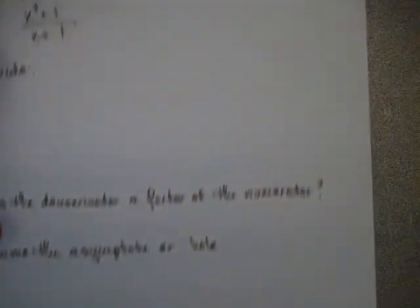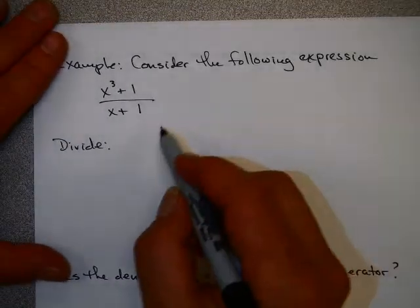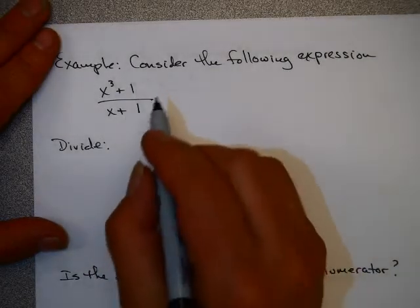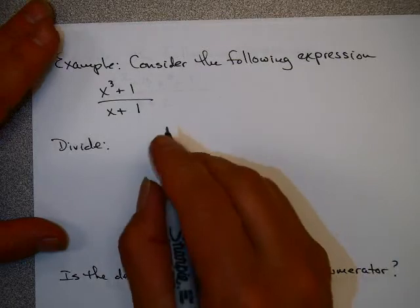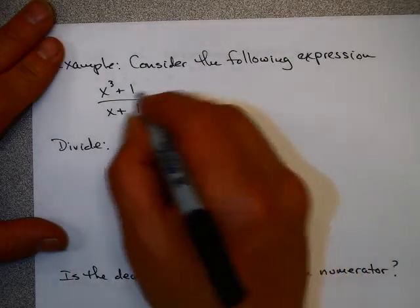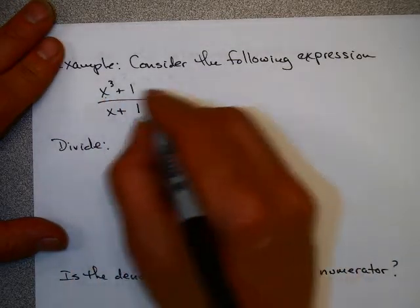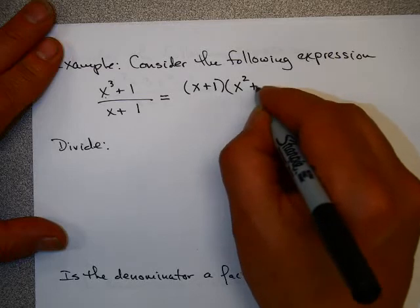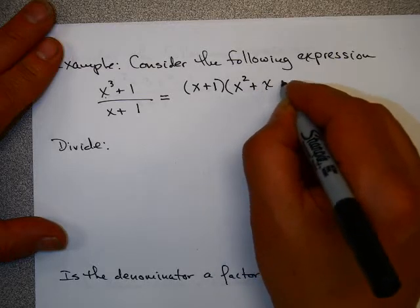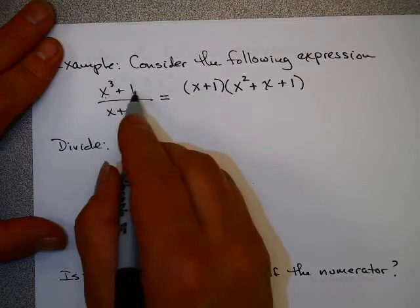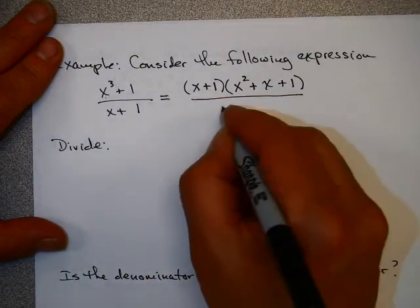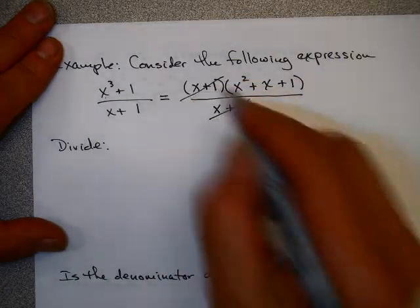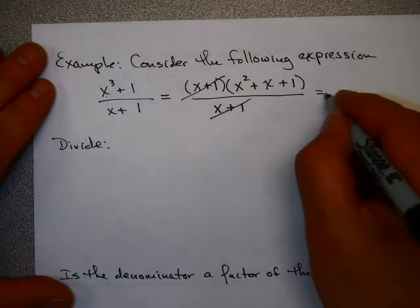Okay, let's do another one. Here we're going to consider this expression. We're going to divide. Now you could do that problem in the same manner you did the previous one, or you could be clever, and you could remember that this is the sum of cubes. A few quarters ago you had this idea, that this could be factored this way. x cubed plus 1 was factored this way. If you look at that, then these of course will divide out and you will get this.